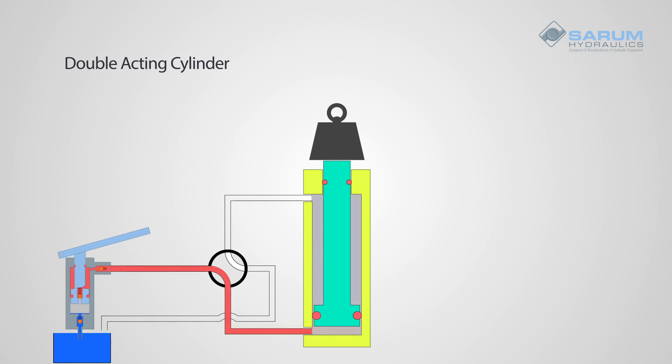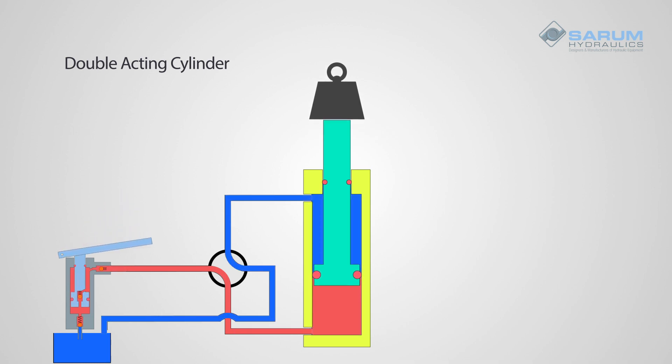Pressurize the bottom of the ram, or full bore end, to generate force. You need to connect the upper chamber, or reduced bore, to the tank or the ram will jam. You can see the ram is now extending.